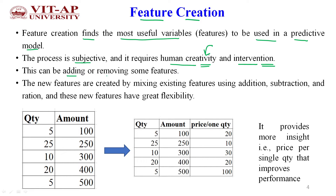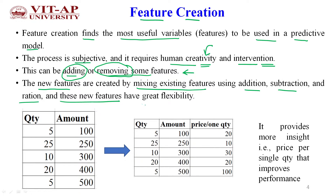This can involve adding or removing features. When the software engineer is interfering in the dataset, he can add features to improve the machine learning model. At the same time, he can remove features which are not relevant to the problem statement. New features can also be created by mixing existing features using addition, subtraction, or rational operations, and these new features have great flexibility to improve model performance.